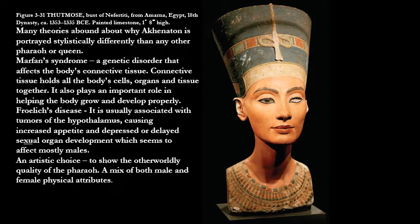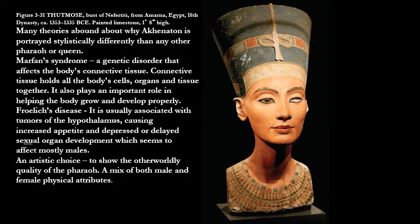The Pharaoh is portrayed the way he was — almost called Marfan's syndrome, a genetic disorder, or Froelich's disease. Both of these are connected to the idea that the Egyptian royal family was very inbred. It was not unusual to find sisters marrying brothers and first cousins marrying each other. However, I think it was more likely an artistic choice — a yin and yang idea of blending the male and female and embodying them into one body, since he is the god with both attributes, which makes him seem more powerful.